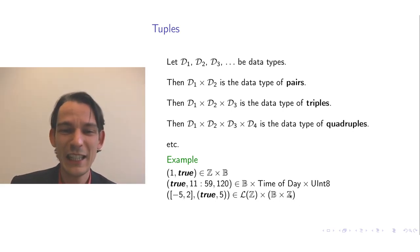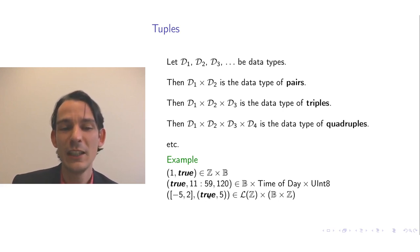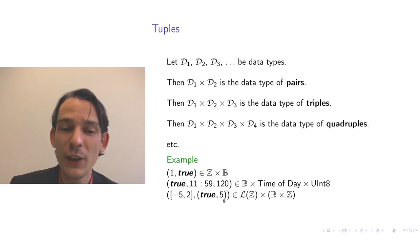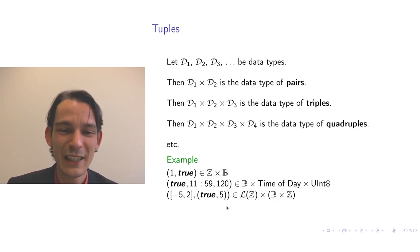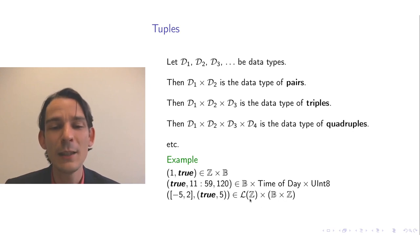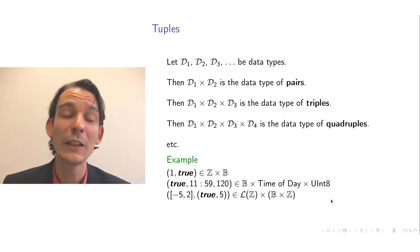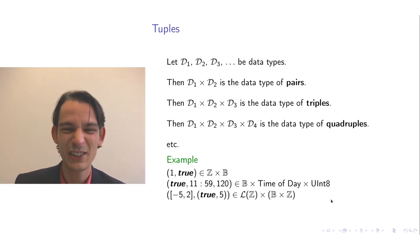A concrete nested example: the list [-5, 2] is a list of integers, and the pair (true, 5) is a value of the data type pairs of booleans and integers. So the overall pair ([−5, 2], (true, 5)) is a value in the data type of pairs of lists of integers and pairs of booleans and integers.